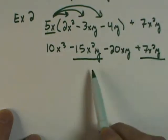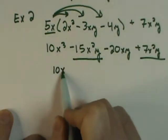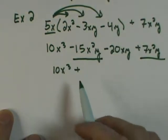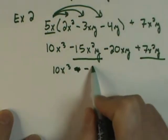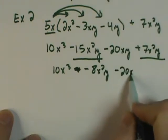So I could write this as 10x cubed plus minus, because negative 15 plus 7 would be negative 8, x squared y minus 20xy.